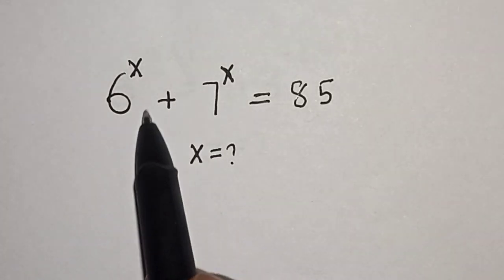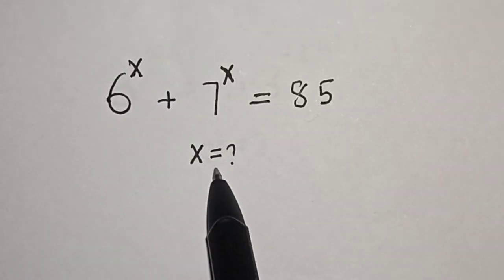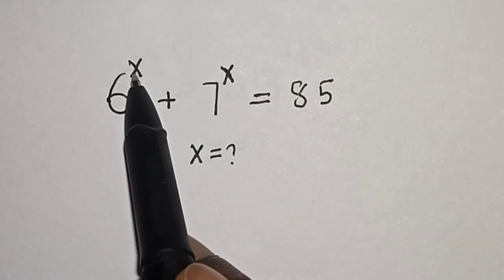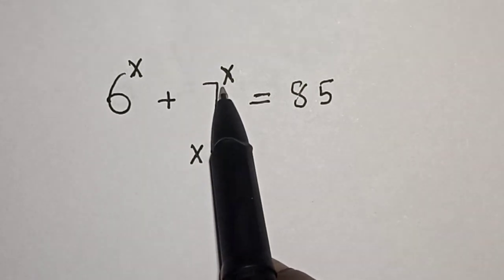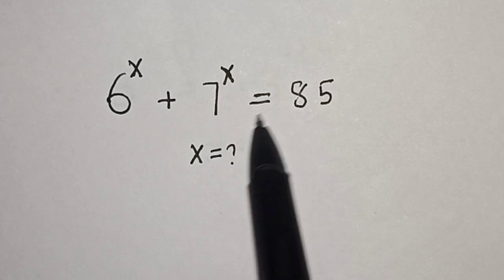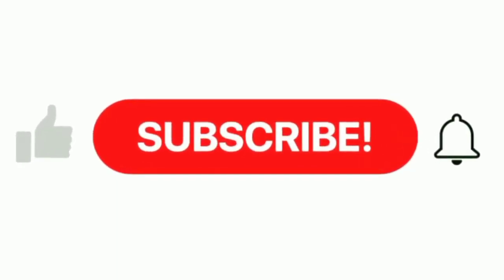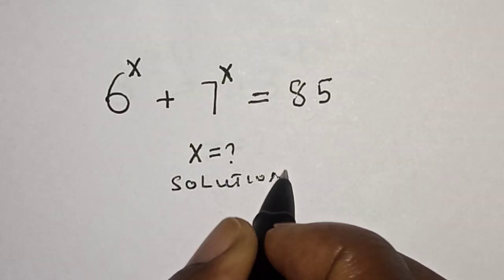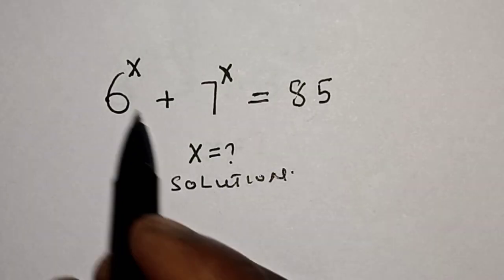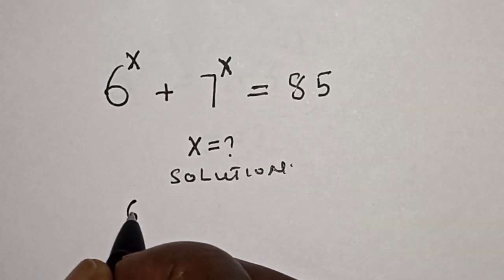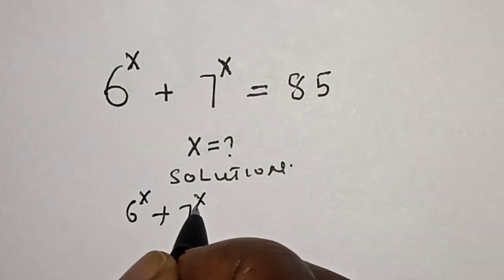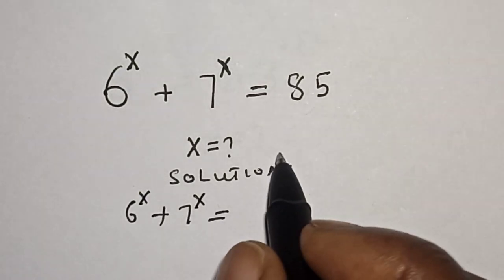Hello, welcome to math. In this class we want to find the value of s from this given exponential problem: 6 raised to power s plus 7 raised to power s is equal to 85. Solution — this is the given equation: 6 raised to power s plus 7 raised to power s is equal to 85.